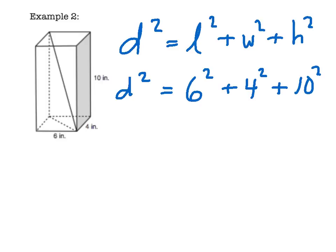Step three will be to square all of the terms that we can. We don't know what D is, so that stays D squared. 6 squared is 36, plus 4 squared is 16, plus 10 squared is 100.